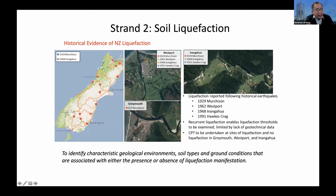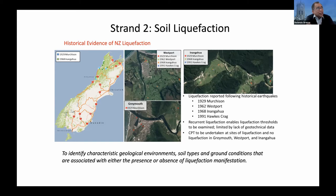One project focuses on historical evidence of liquefaction in New Zealand. Based on works from flagship project two, we've identified areas where observations or manifestations of liquefaction have been recorded. In this project we'd like to compare predicted liquefaction — based on existing SPT or CPT-based liquefaction methodologies — with observations to identify areas where predictions are consistent or inconsistent with observations. More importantly, we want to identify the characteristic geological environments, soil types, and ground conditions associated with either the presence or absence of liquefaction manifestation, in order to improve the suite of liquefaction prediction tools available to practitioners.